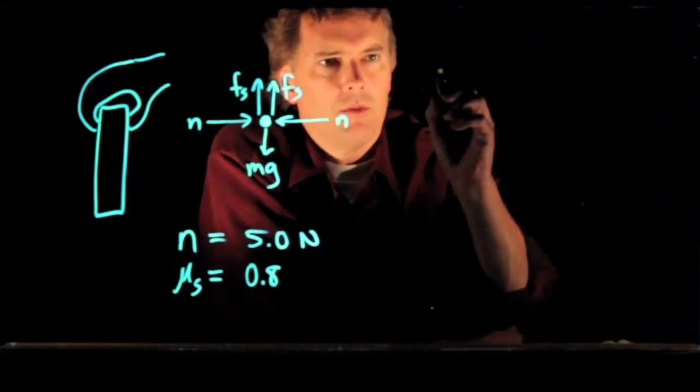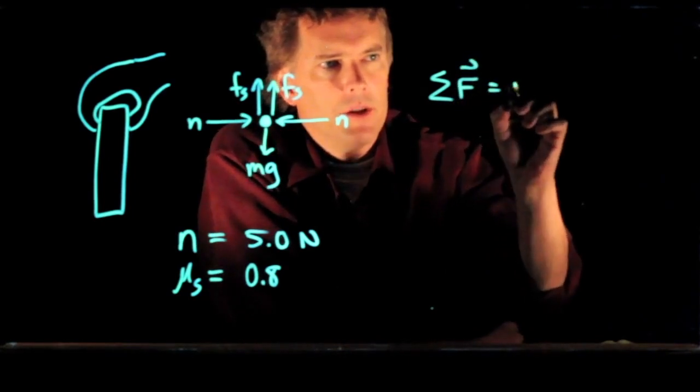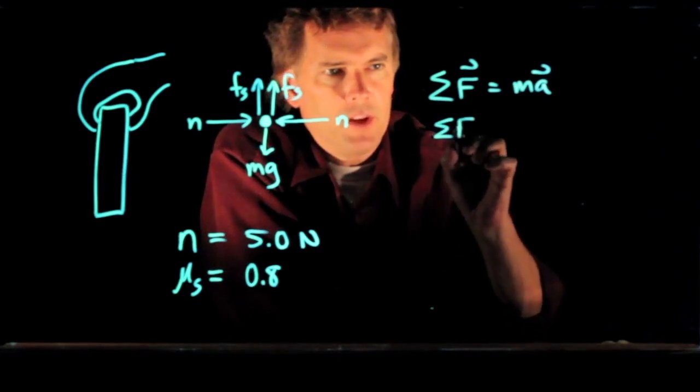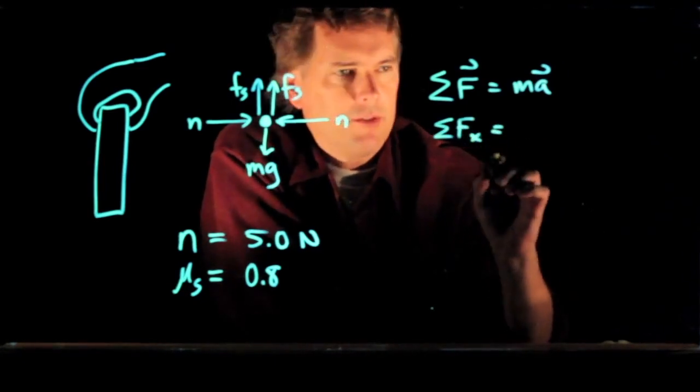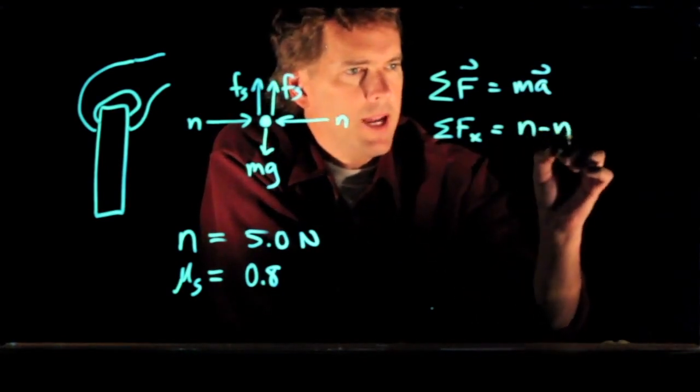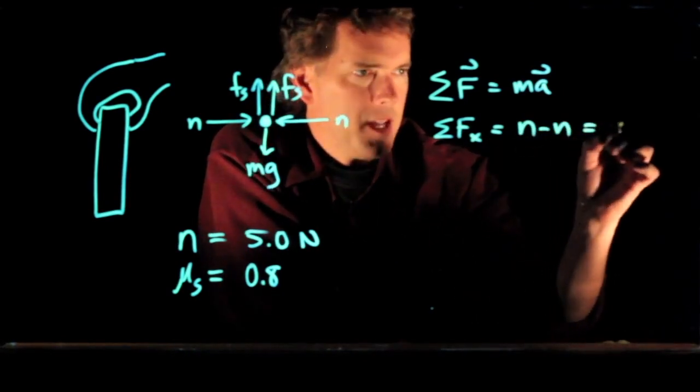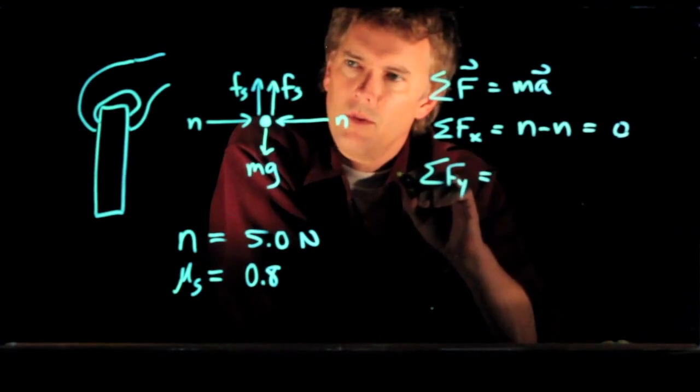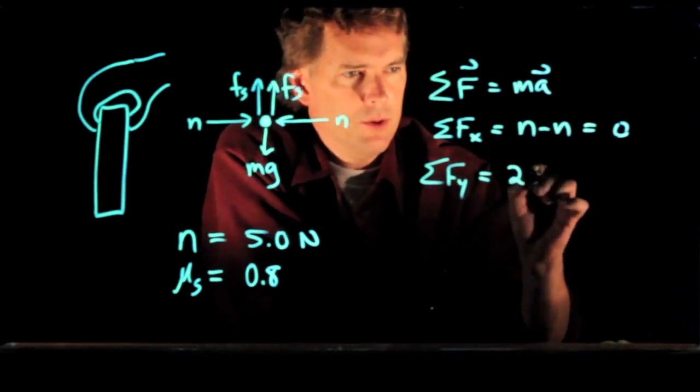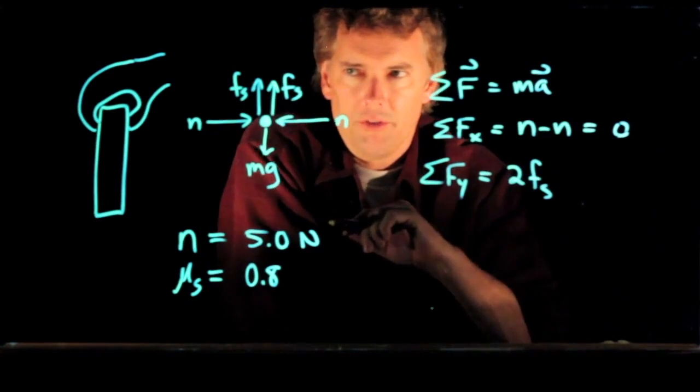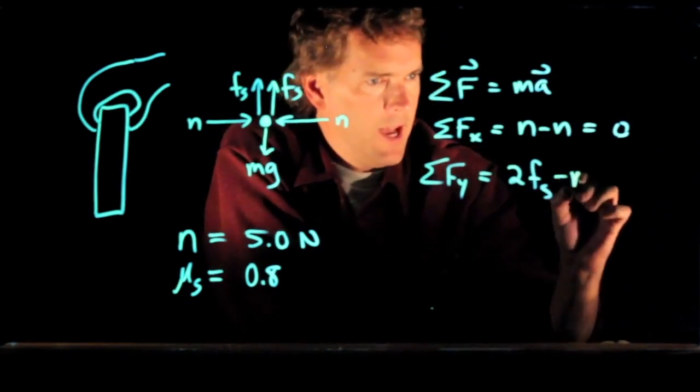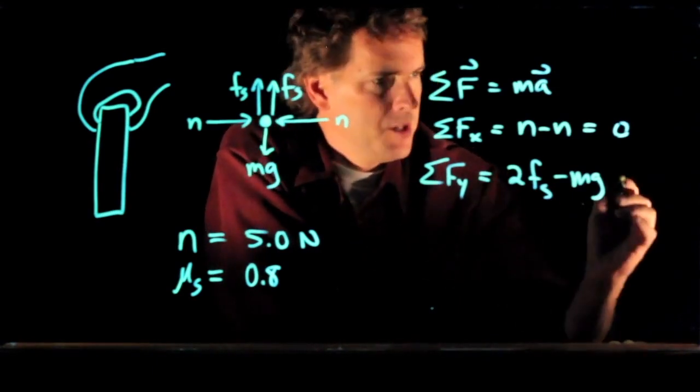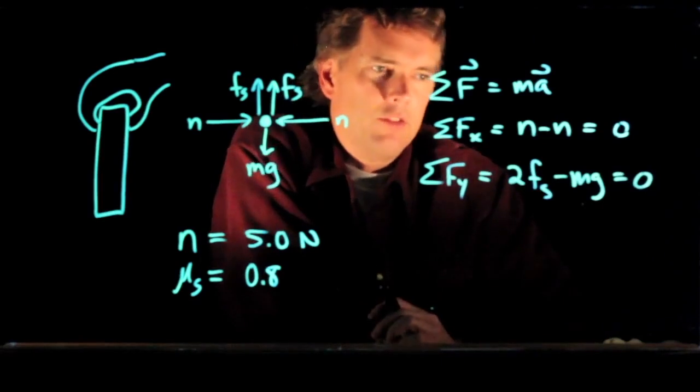Sum of the forces is equal to the mass times the acceleration. We've got sum of the forces in the x direction. That's not very interesting. That's just n from one side of the book minus n from the other side, equal to zero. But what about the forces in the y direction? We have two of these frictional forces going up. We have mg going down. And if we are in equilibrium, there's no acceleration. That thing is just equal to zero.